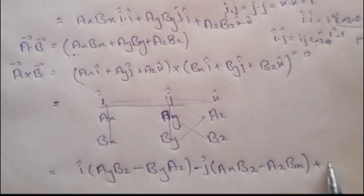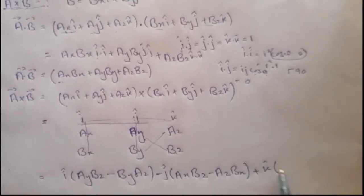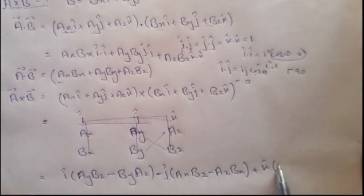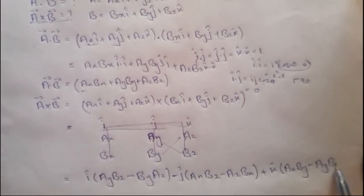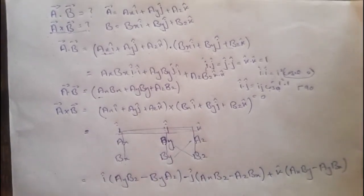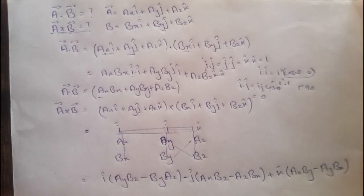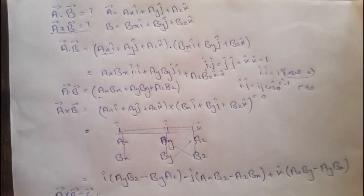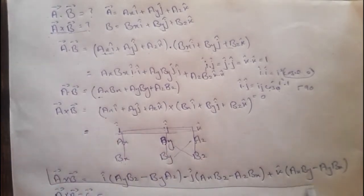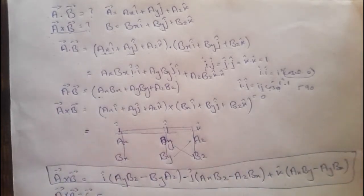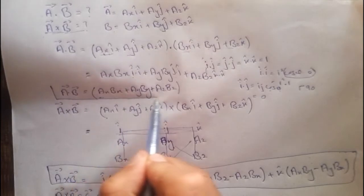For the k component, we add plus k times (ax·by minus ay·bx). Therefore, the final result is a cross b equals i(ay·bz minus by·az) minus j(ax·bz minus az·bx) plus k(ax·by minus ay·bx). This is the cross product between vector a and vector b, while the dot product was equal to ax·bx plus ay·by plus az·bz.